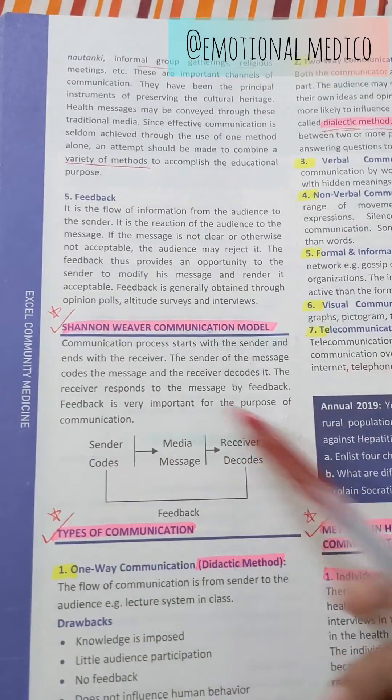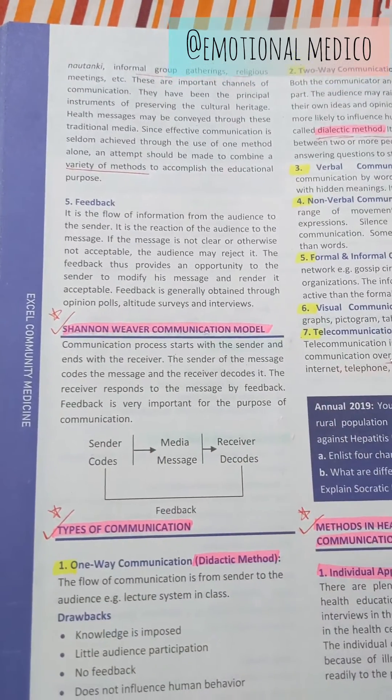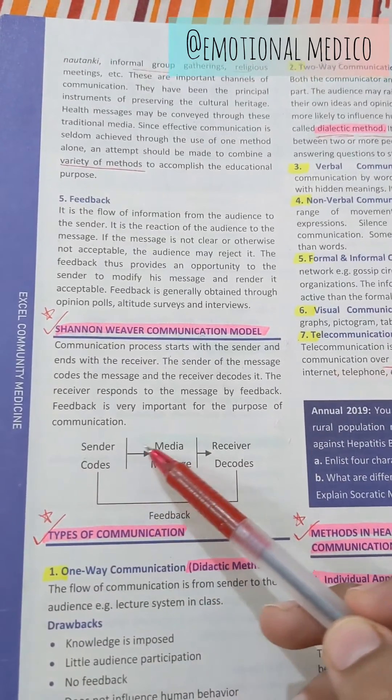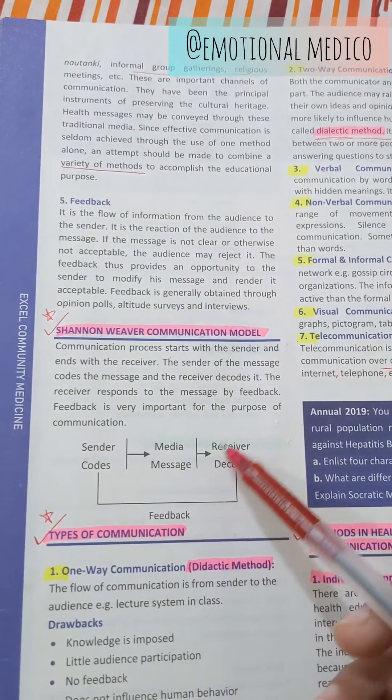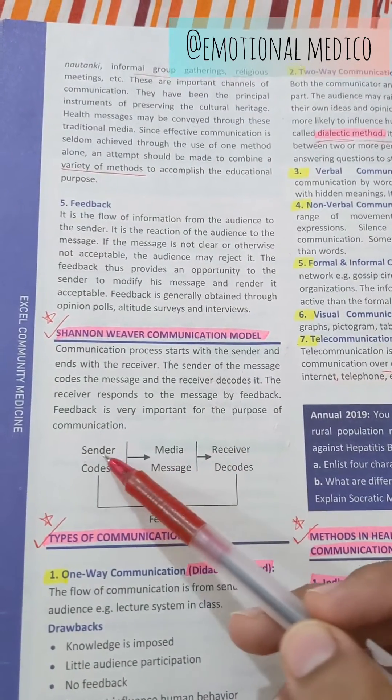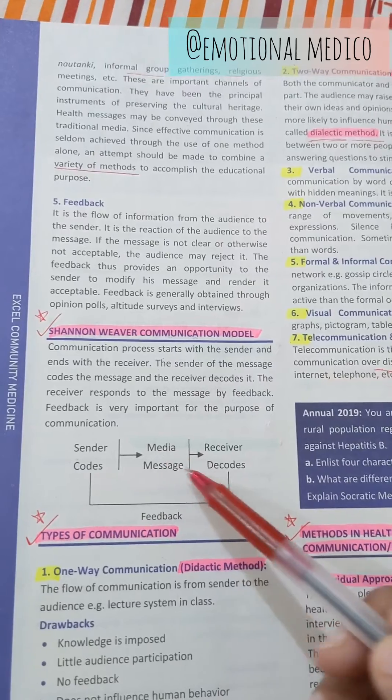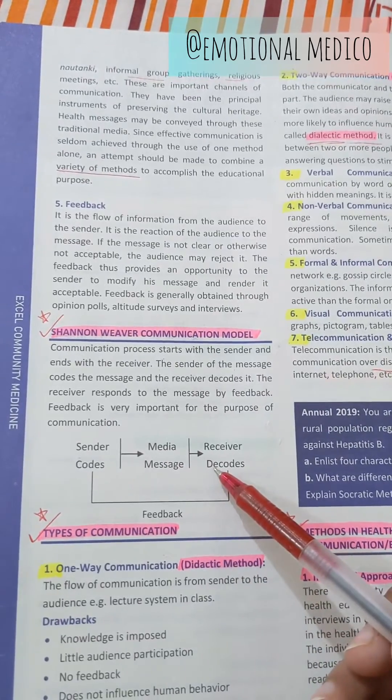So the Shannon Weaver model — also referred to as SM — consists of the sender, message, and receiver. The sender has coded the message through media, and the receiver has decoded it.